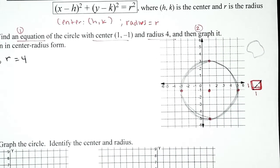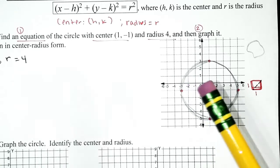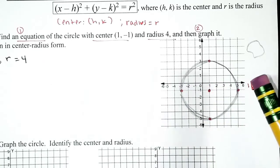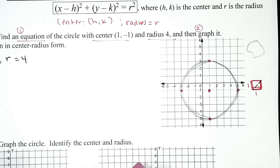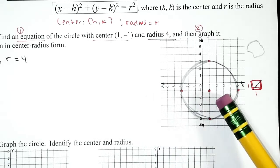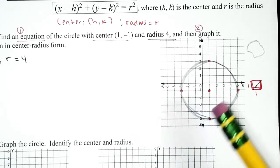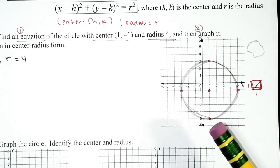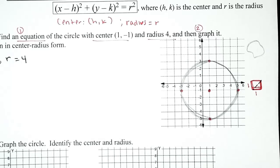What if your circle doesn't look perfect? It's okay — just try your best to make it look circle-ish. What I'm looking for is: the center graphed, those four points that are four units away from the center explicitly marked, and your best attempt at drawing a circle.